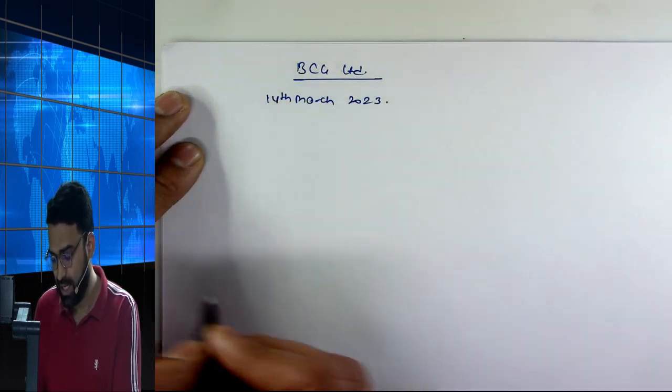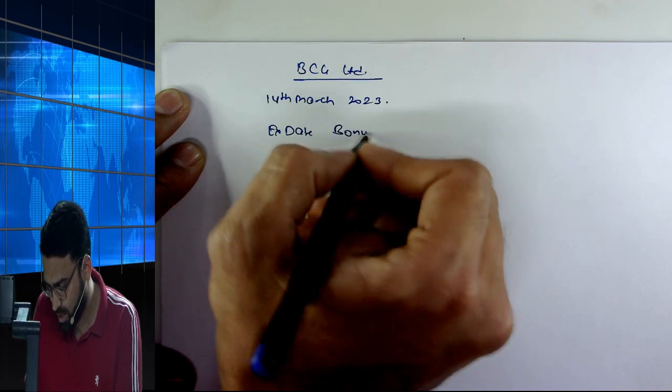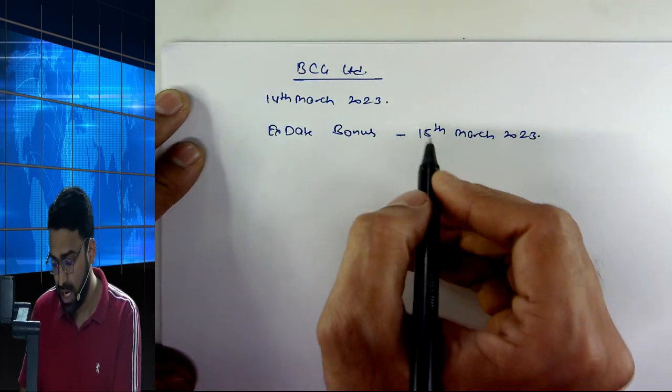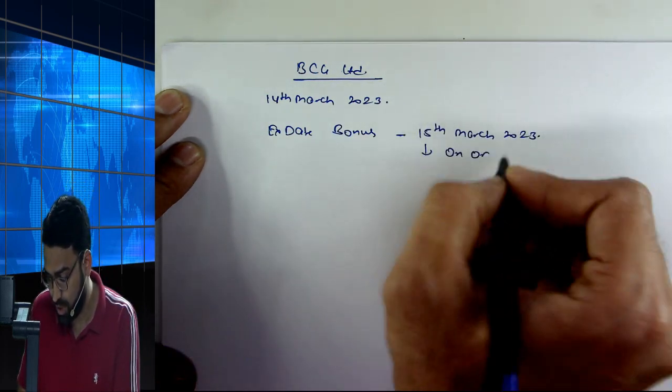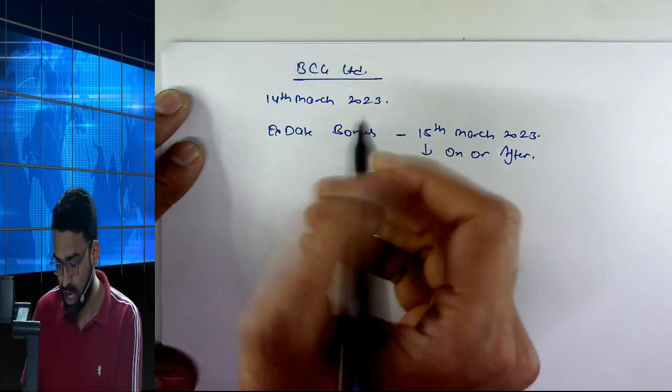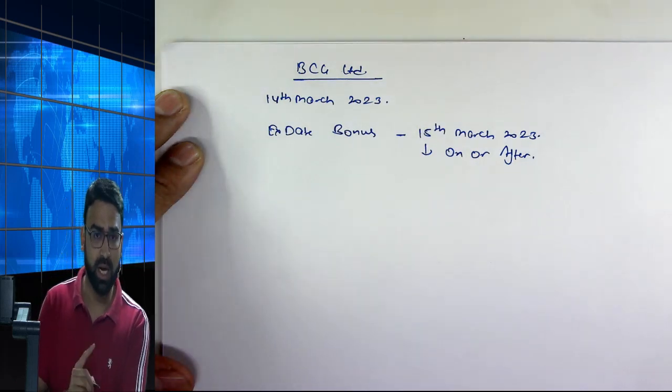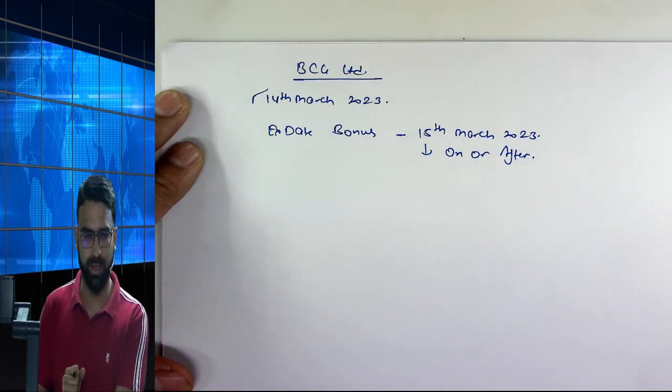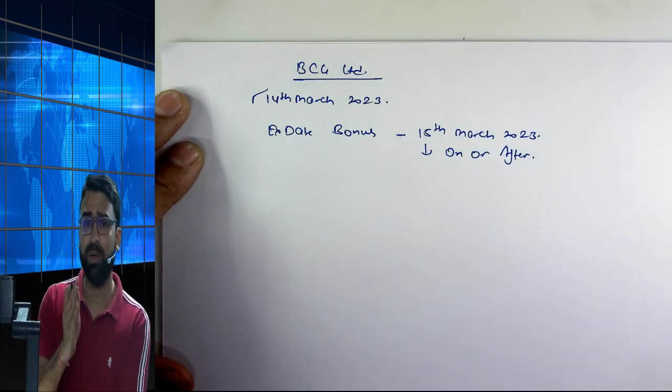Now, what has happened? BCG Limited has decided the ex-date for the bonus as 15th March, 2023. This means that if you buy shares on 15th March or after 15th March, then you will have no benefit from this bonus. If you need to get the bonus benefit, then you need to buy the shares before 14th March. So the ex-date is the date from which you don't get the benefit.